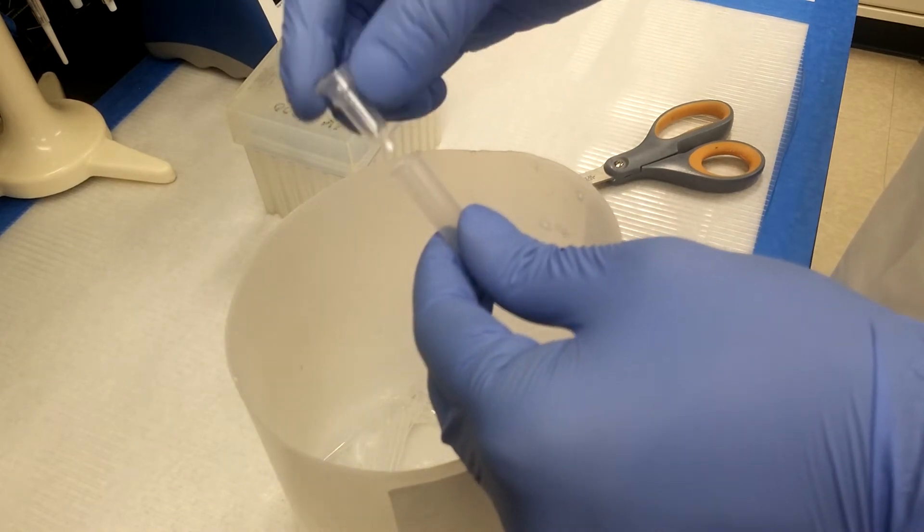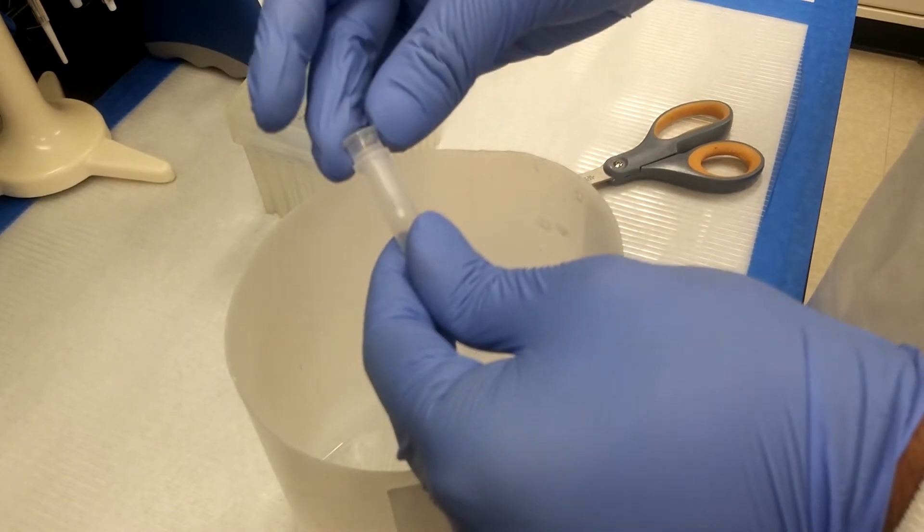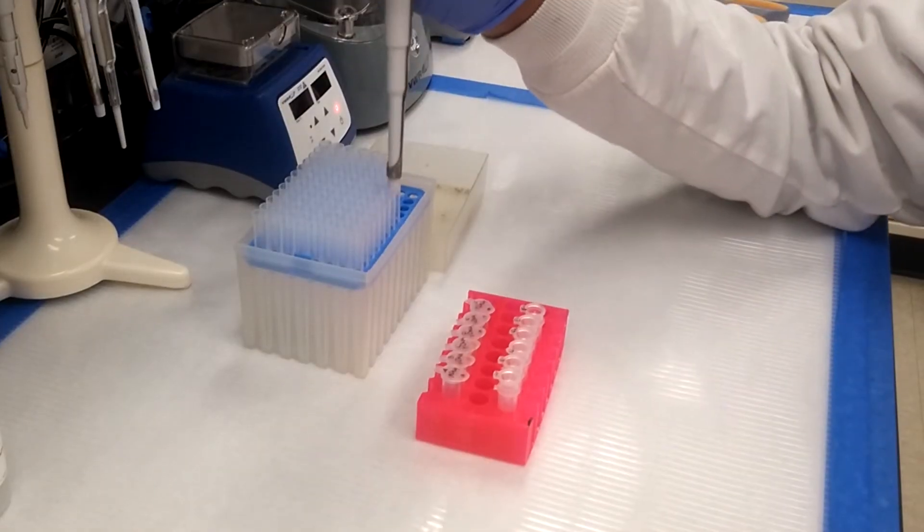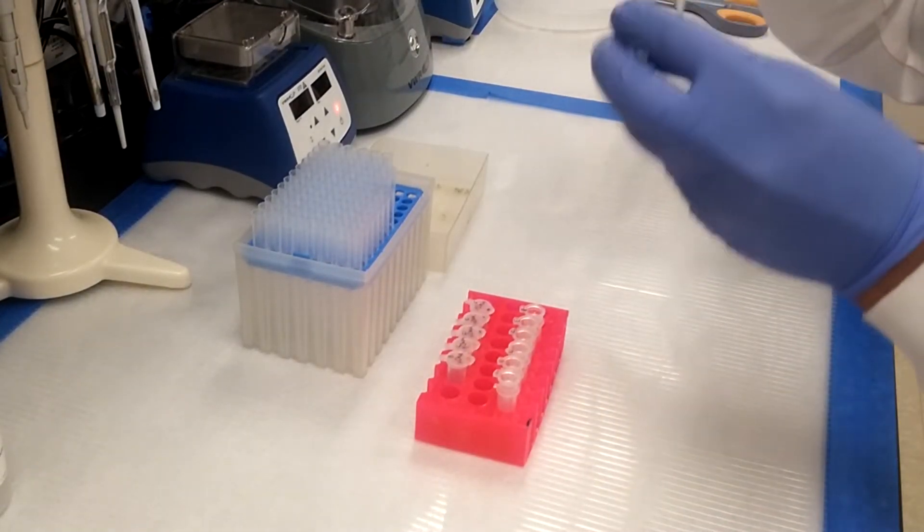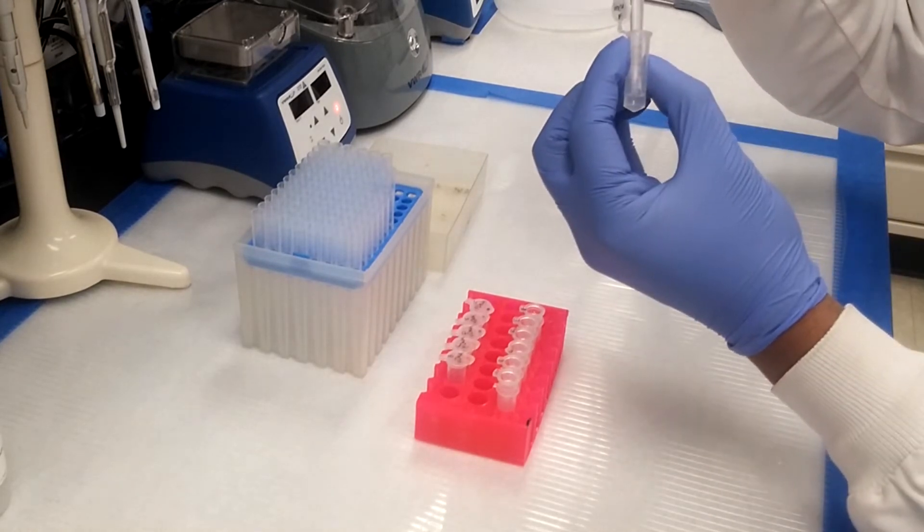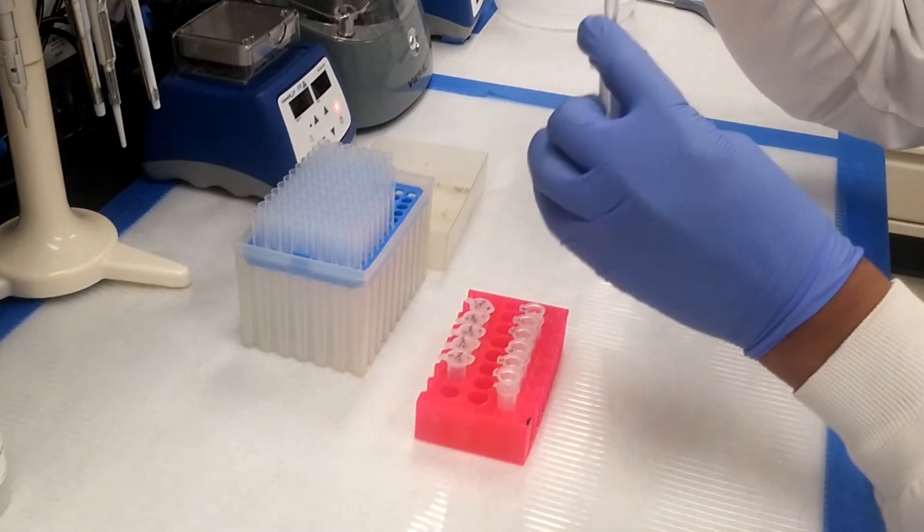8 filtration columns are labeled 1 through 8 and are placed in their corresponding collection columns. The samples, now about 700 microliters full, are then transferred from the 2 milliliter Eppendorf tubes to their corresponding filtration columns.